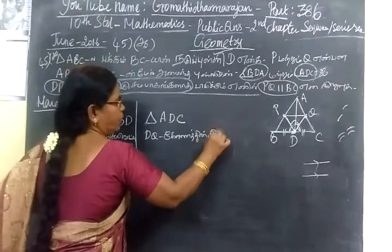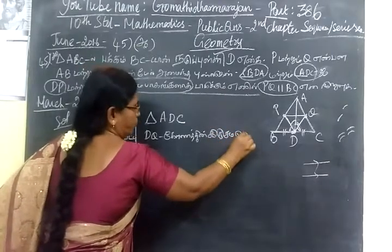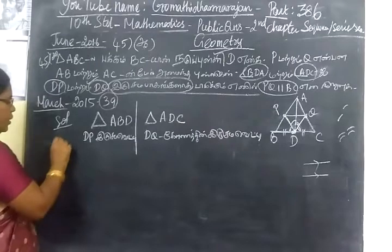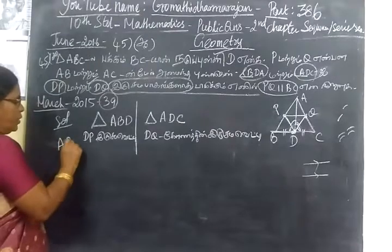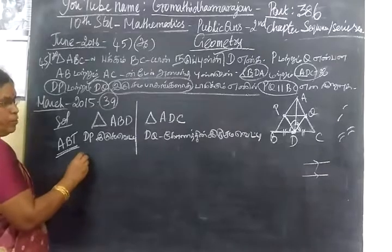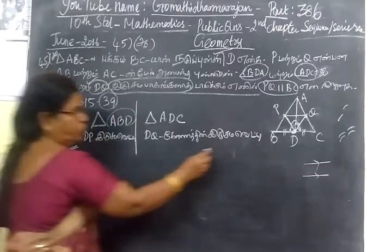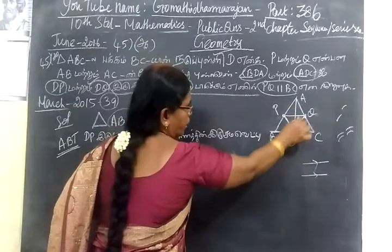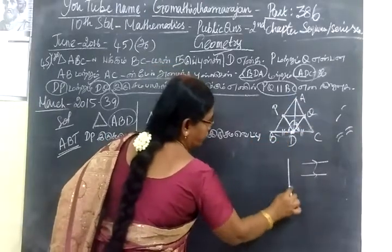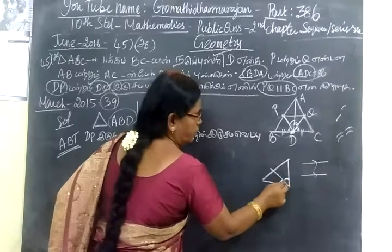Now we will use the Angle Bisector Theorem. Angle Bisector Theorem — this is the theory we will use. This form is to order. This form is the form: DA by DU, then this is the theorem.